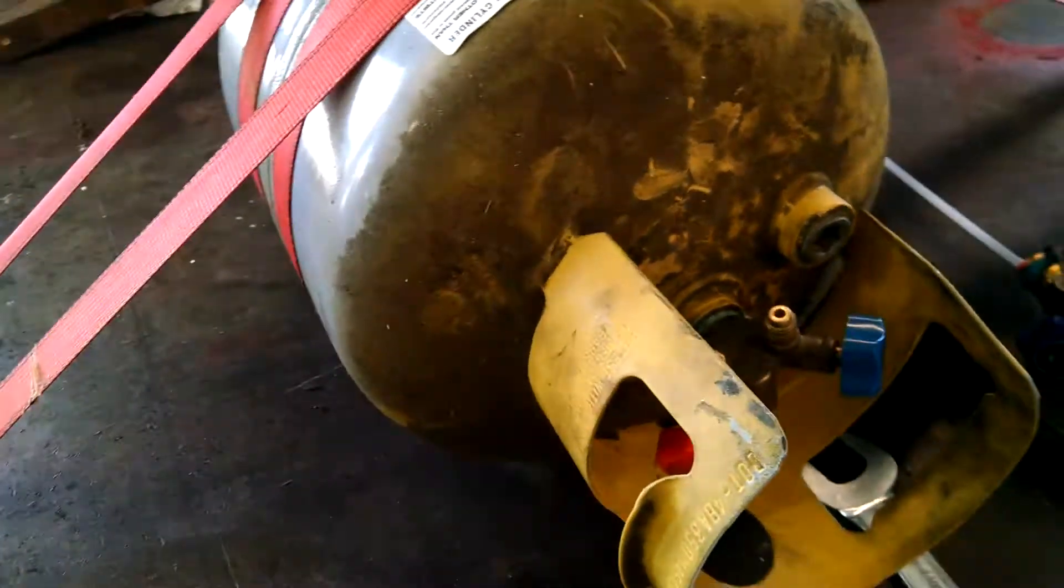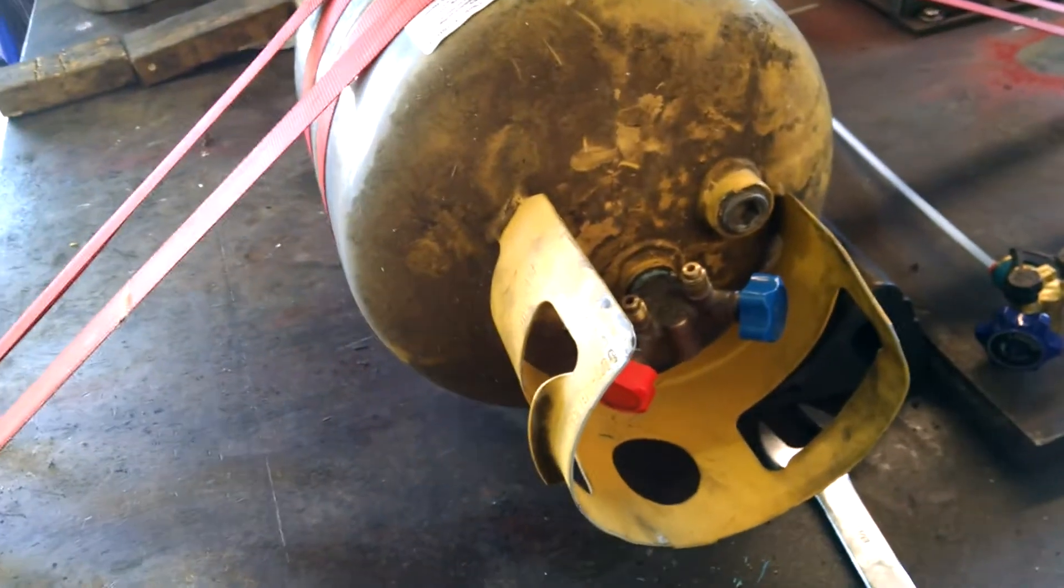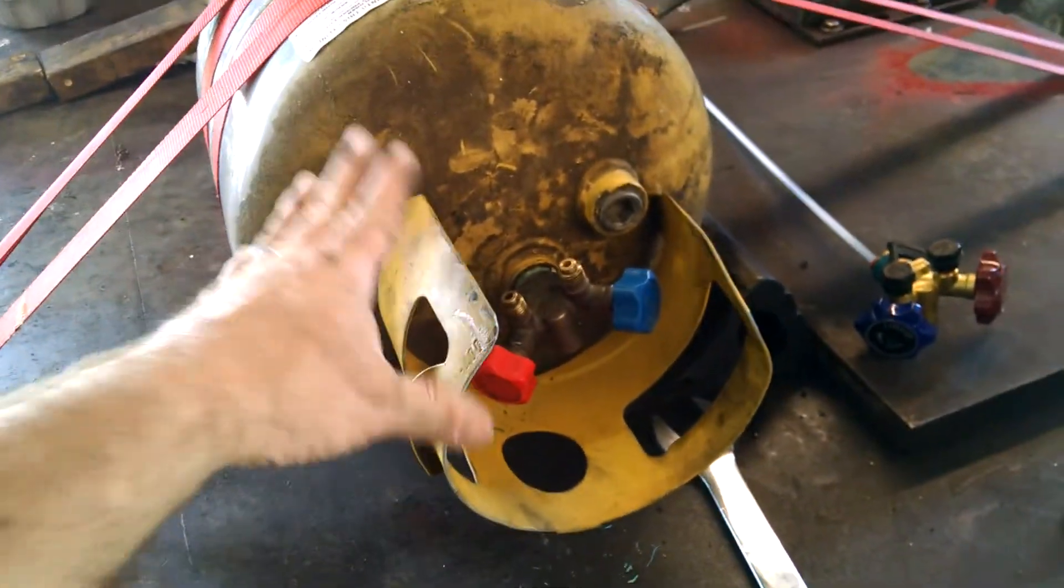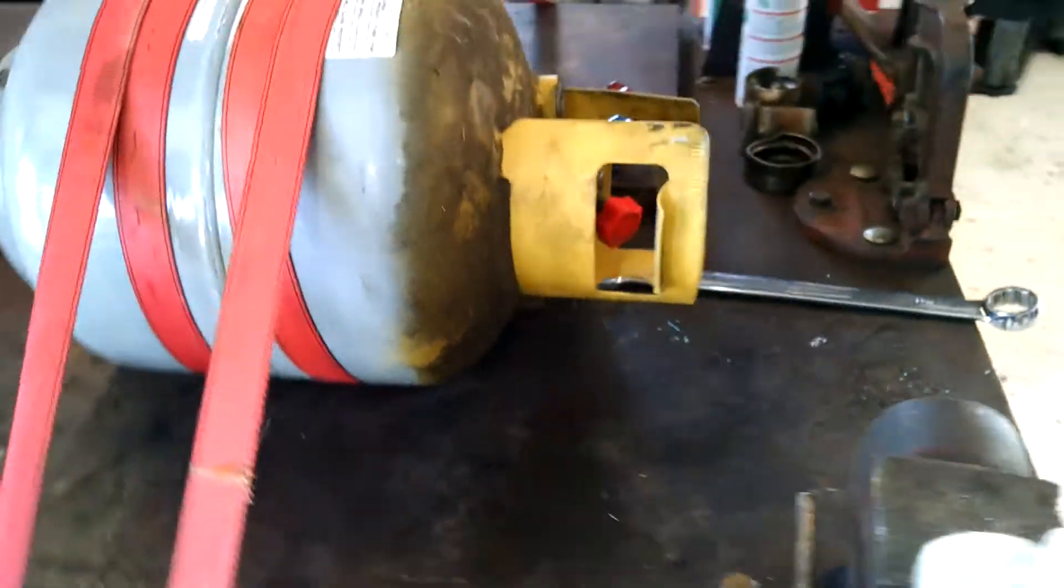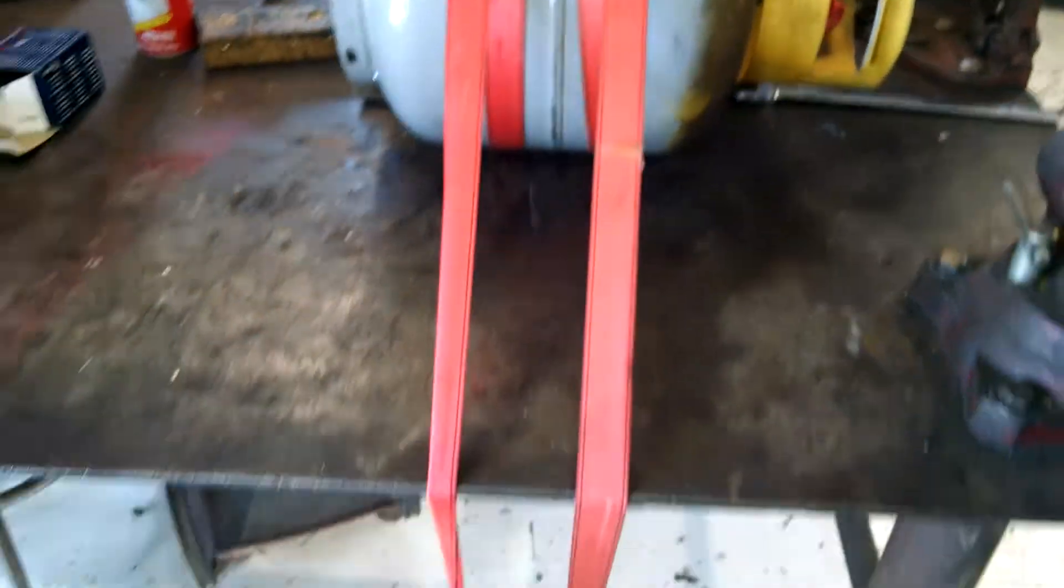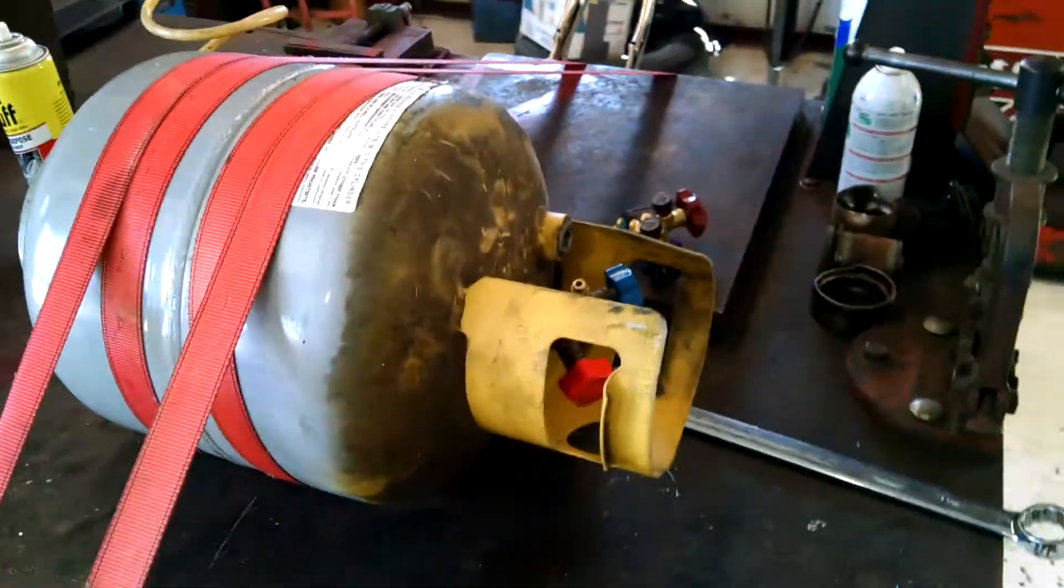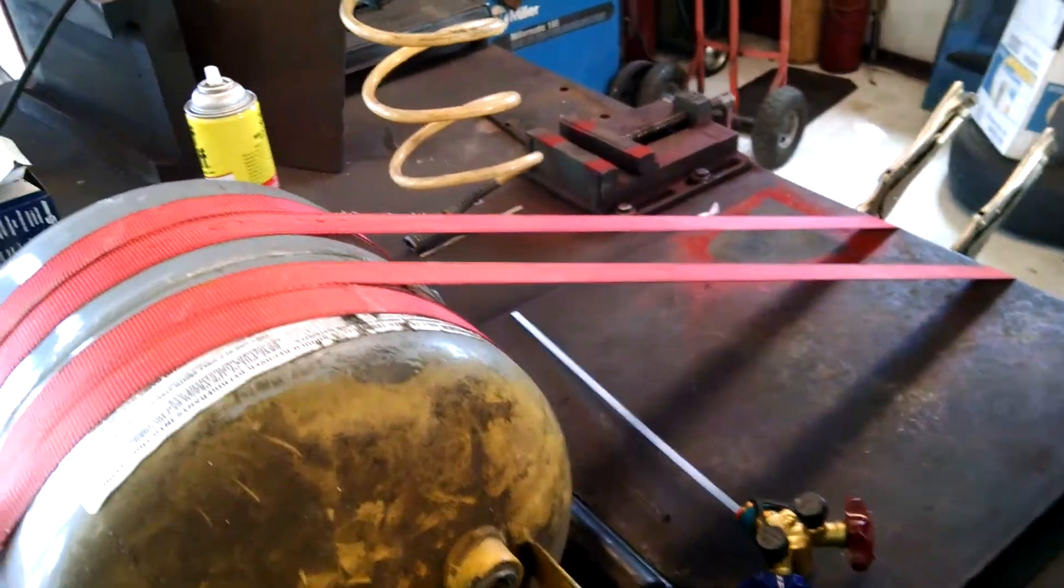As far as changing the valve goes, the issue becomes one of how to secure it so that you can get the valve out. What we've done is placed straps across the table around the tank. These are rated at about 1,500 pounds apiece.